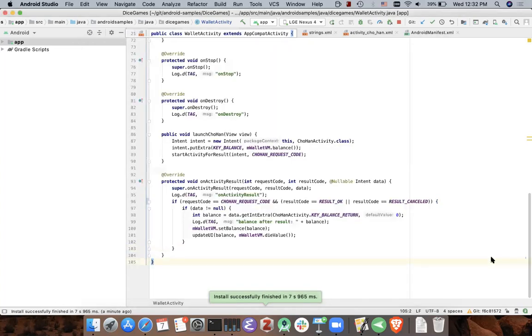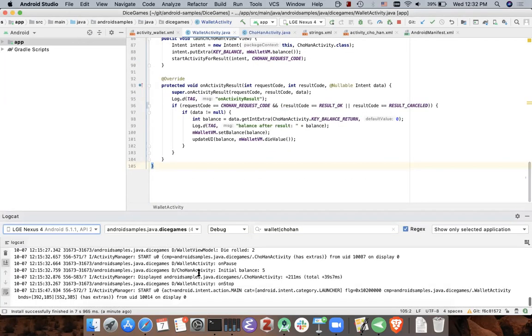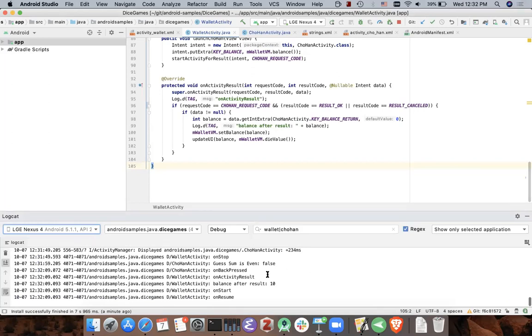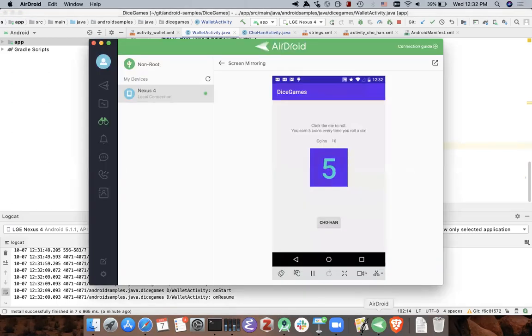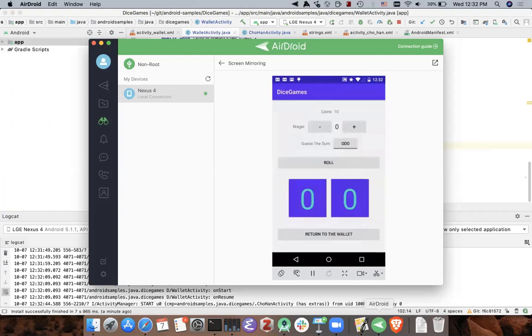And now instead of clicking the return to wallet button, I'm going to click the back button. What happens now? The number of coins is sent back correctly. And let's quickly see the logcat messages we see here. On back pressed and then on activity result in wallet activity. So it did go the way we expected it to go.